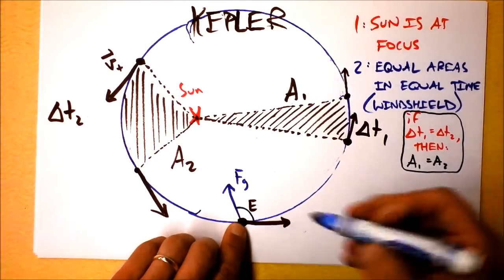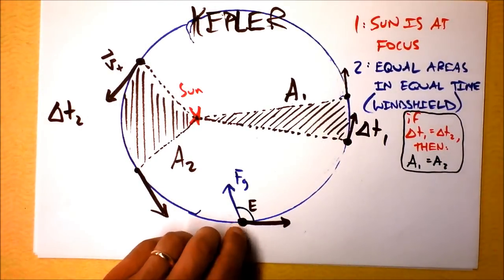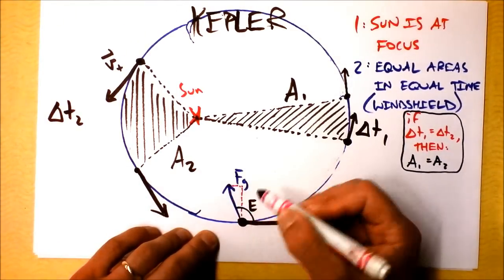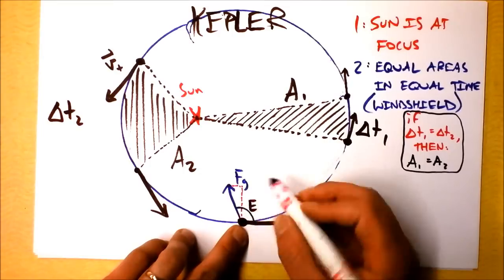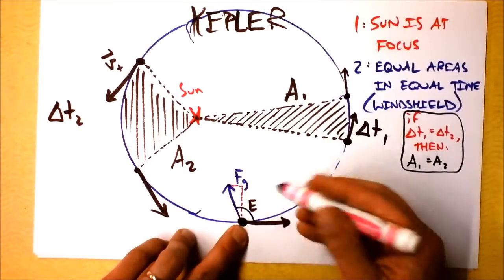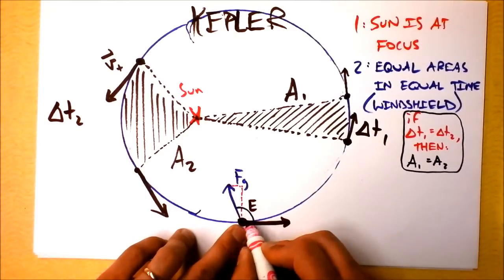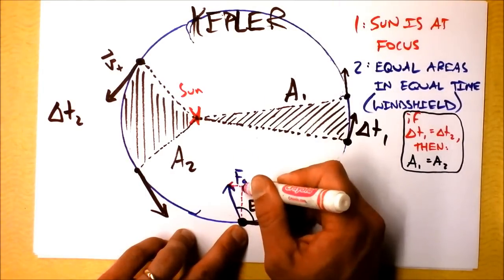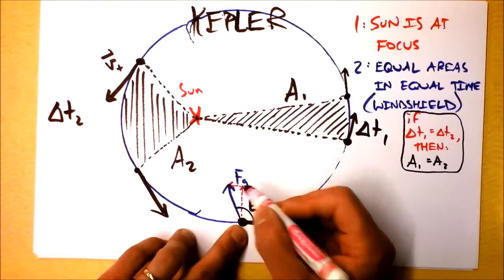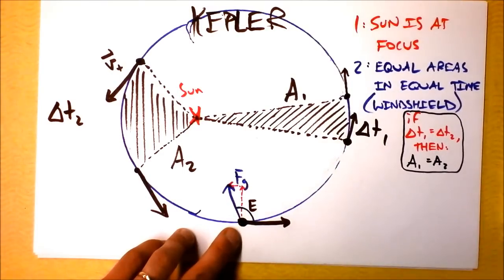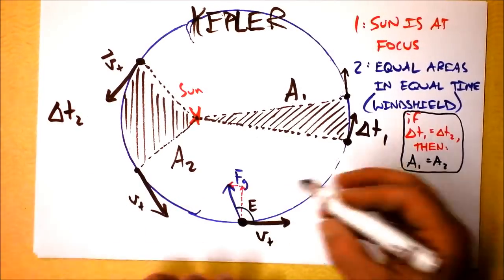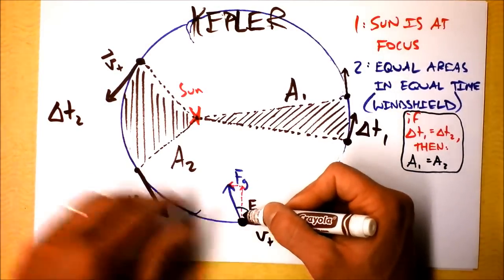So if we were to resolve this into two components, let's resolve this force of gravity into two components. We could say that this force of gravity, this component of the force of gravity directly upward, is the centripetal force that's maintaining this turn, and the backwards component of the force of gravity is the component of the force of gravity that's causing this velocity to decrease. The tangential speed is decreasing because there's some force going back on it.